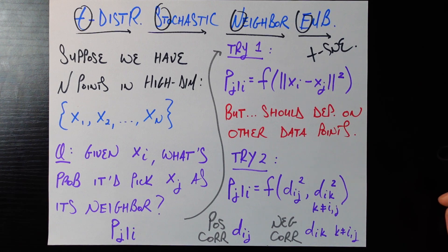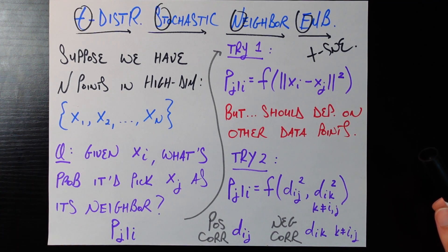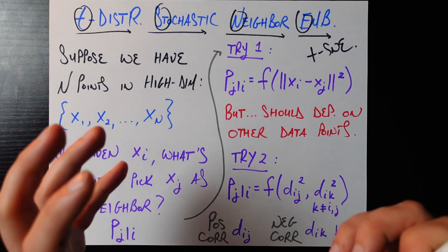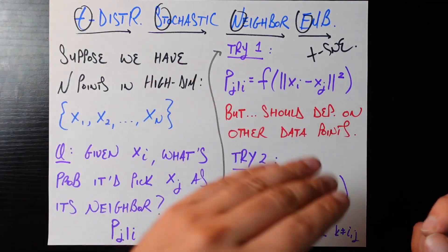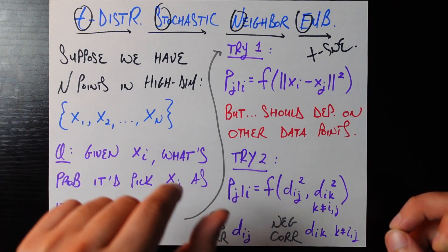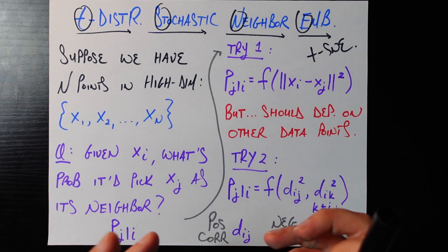We're going to start by asking a series of questions. The key insight — what makes TSNE fundamentally different from PCA — is that TSNE is operating on a unit by unit level. It's looking at x1 and x2 and trying to preserve something about the relationship between those two data points in your original data, and preserve that relationship in the new lower-dimensional data. It's working on a pair by pair basis, whereas PCA is working on a more global level.